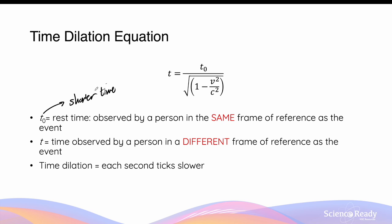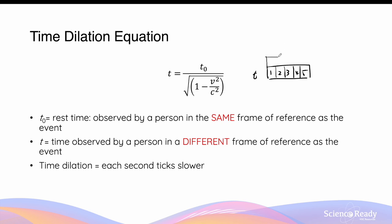t0 is the shorter time because each second ticks slower. For example, on Earth we might measure a particular event to last 5 seconds — this is t. The time observed by the astronaut on the spaceship, each second will appear longer, so the astronaut counts fewer seconds — this is t0. So t0, the rest time, will appear to be shorter because each second becomes longer compared to what a second is equivalent to as observed by a person in a different frame of reference.